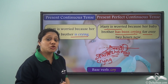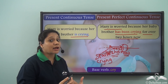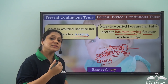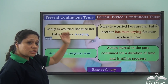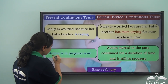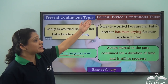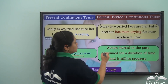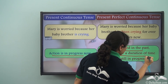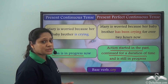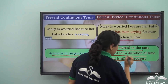'Has been crying' is showing us an action that started sometime in the past, continued for two hours, and is still happening now. So the present continuous tense shows us an action in progress now, whereas the present perfect continuous tense shows us that an action started in the past, continued for a duration of time — two hours in this case — and is still in progress.